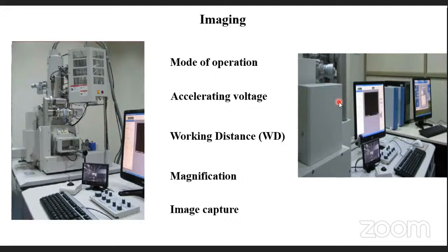Secondary electron mode is more than enough for basic analysis. For composites requiring elemental contrast on your image, go for backscatter electron imaging. For knowing which elements are present in your sample, go for EDS — energy dispersive spectroscopic analysis, which uses the X-ray detector. You also need to decide the acceleration voltage. For metallic samples we can go up to 25–30 kV, but for biological or polymer samples we don't go beyond 5 kV, as higher voltage may damage the sample.